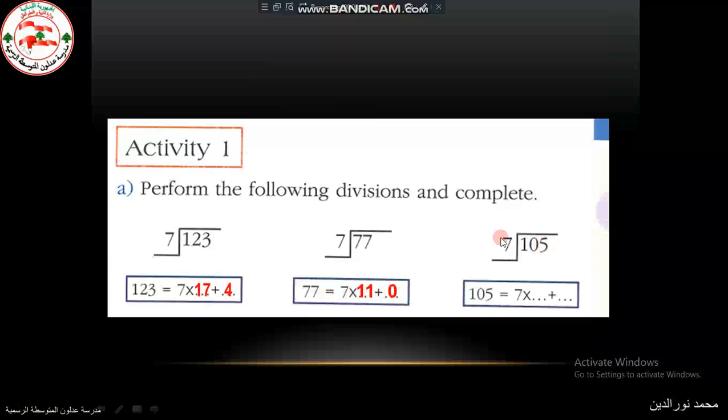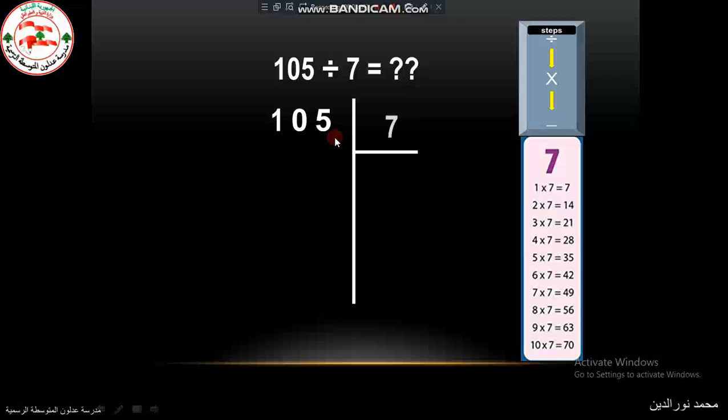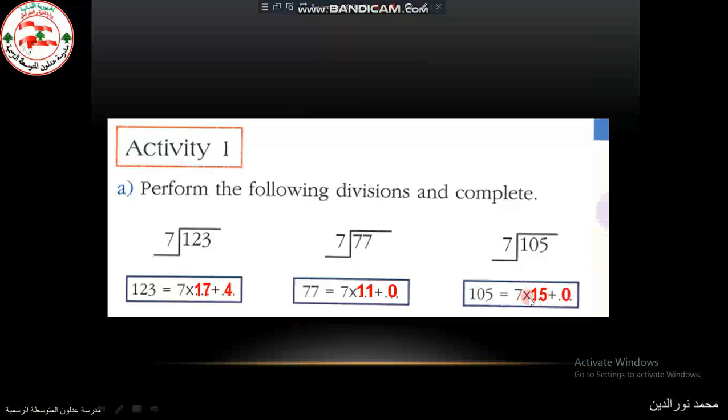Then we have 105 divided by 7. So 1 divided by 7 is 0. 0 times 7 is 0. We subtract and we drop the 0. How many 7s are in 10? It's only 1. 1 times 7 is 7. 10 minus 7 is 3. And we drop down the 5. Then we have 35. In the multiplication table of 7, there is 35 here. It's 5 times 7. We put 5 times 7 is 35. And we subtract. And the remainder is 0. The quotient is 15. So 15 plus 0. 7 times 15 plus 0.